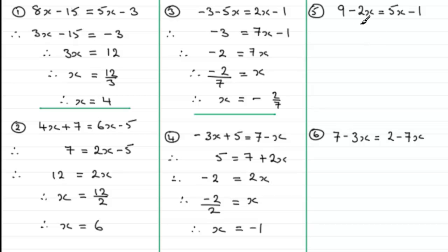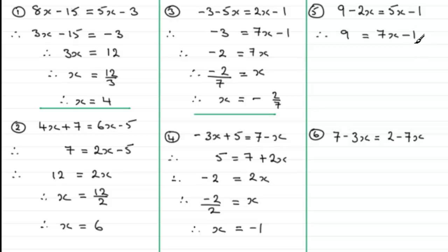For number 5, 5x is greater than minus 2x, so I'm going to group my x terms on the right. I add 2x to both sides: on the left, 9 minus 2x plus 2x just leaves the 9. On the right, 5x plus 2x gives 7x, and we still have the minus 1. I then add 1 to both sides to remove the minus 1: 9 add 1 is 10, and minus 1 add 1 is zero, leaving 7x.